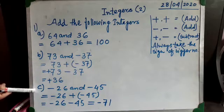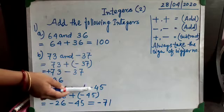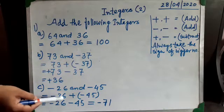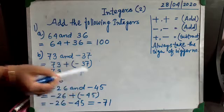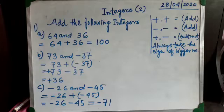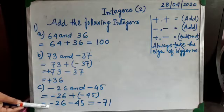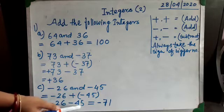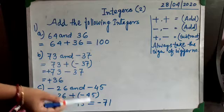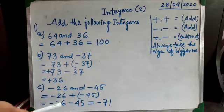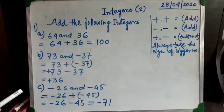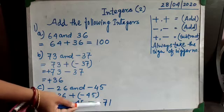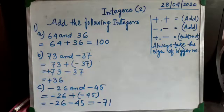The third example: minus 26 and minus 45 — we have to add them. So I have written minus 26 plus (minus 45). Opening the bracket, we get minus 26 plus minus 45. Both numbers have the same sign — both are negative — so we add them. The answer is 71. Now it is time to put the sign: 45 is the bigger number and its sign is minus, so the answer is minus 71.